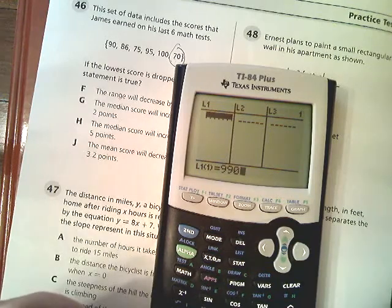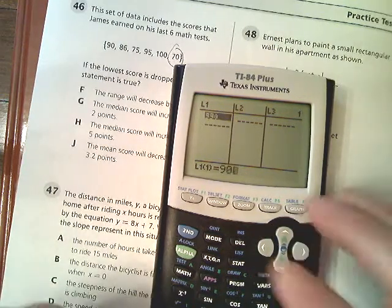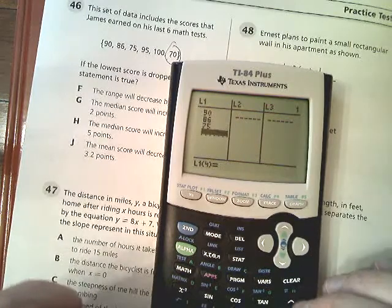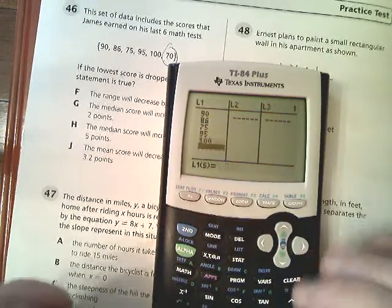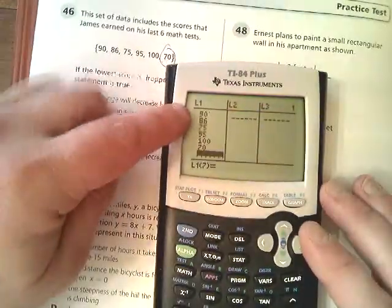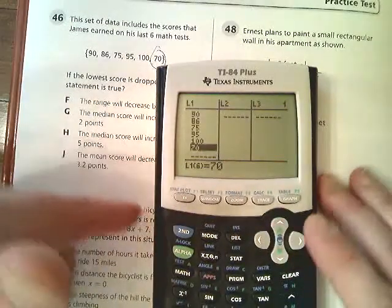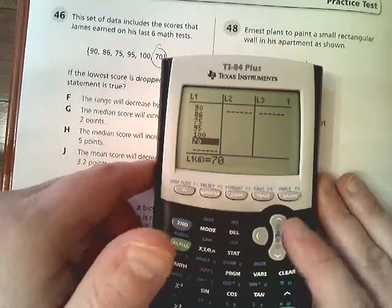So I'm going to type in the numbers first. Hopefully I don't type in 990 again. 86, which is don't make the same mistake I did. Make sure they're all there. You should have six terms so I can count them. Just go up to this one. It should say L1-6, which it does, so all of them are there.